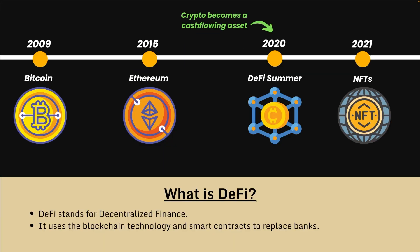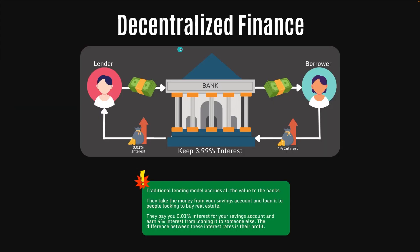And finally, we have decentralized finance. DeFi stands for decentralized finance and it uses blockchain technology and smart contracts to replace the banks. In 2009, we had the Bitcoin white paper, and for a while only enthusiasts and cryptographers were interested in Bitcoin. But in 2015, we got Ethereum, and with Ethereum came a whole new suite of technologies like smart contracts. The evolution of smart contracts and other innovations from 2015 to 2020 led to a huge chain of new developments, and finally in 2020, crypto became a cash-flowing asset — which started off DeFi summer.